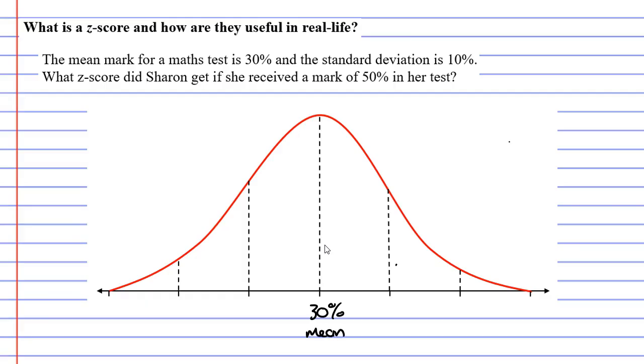Now the standard deviation is 10%, which means as we move to the right, we're going to add on 10% each time. So we get 40%, 50%, and 60%. And we label these with plus 1, plus 2, and plus 3.